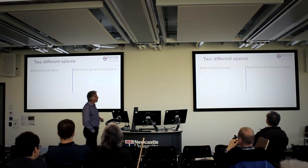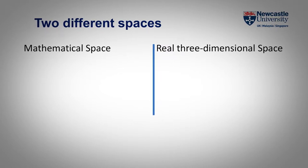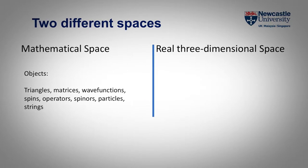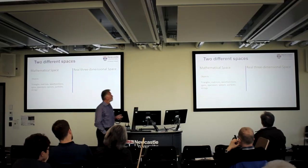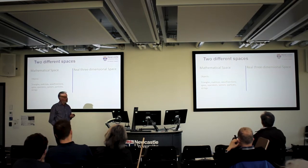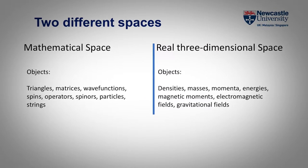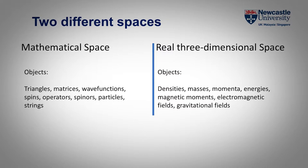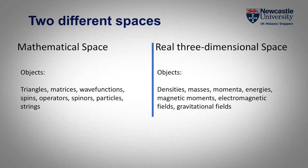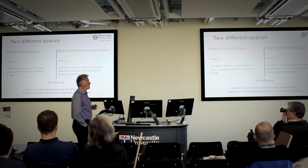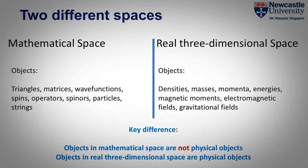We have two different spaces: mathematical space on the left and real three-dimensional space on the right. In mathematical space, spinors, matrices, wave functions, spins, operators, fields, most particles, and strings are mathematical objects. In real three-dimensional space we have physical objects: densities, masses, momenta, energies, magnetic moments, electromagnetic fields, and gravitational fields. Those are all physical objects and they all contain energy and momentum. The key difference is that objects in mathematical space are not physical objects, whereas objects in real three-dimensional space are physical objects.